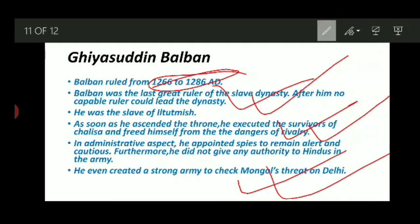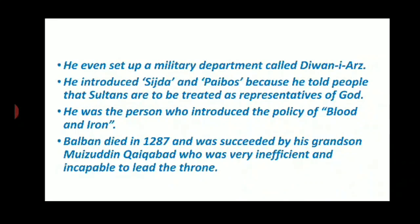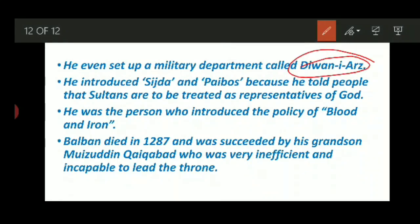He created a strong army to check the Mongol threat on Delhi. He set up a military department called Diwan-i-Arz. He even introduced Sijda and Paibos because he told people that Sultans are to be treated as representatives of God. The most famous policy — the blood and iron policy — was introduced by Balban. He was the person behind this famous policy, which we often hear when concerning the medieval history of India.